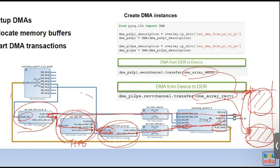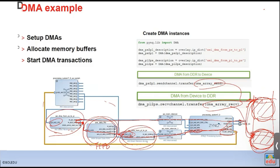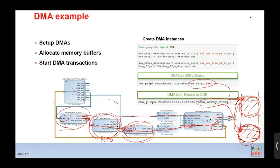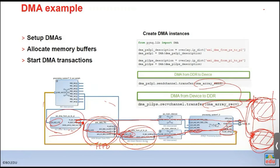For memory-to-memory copy, instead of using CPU — which would read data and write to another address — you program the DMA engine once and the DMA does the transfer, freeing the CPU to do other things. Although it's a simple example, it's useful for saving CPU time for data movement.